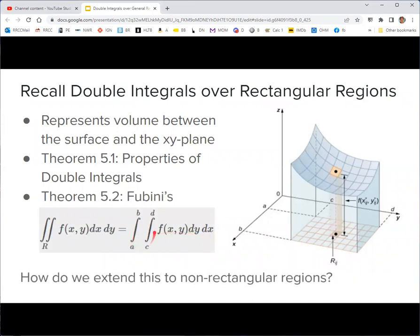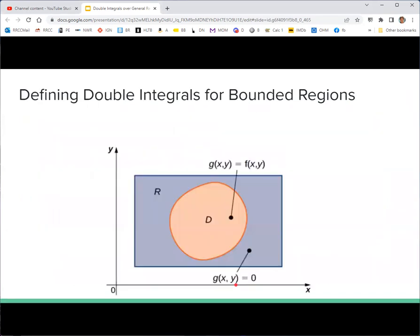If these limits of integration go from A to B and C to D and define a rectangle, the big question is how would you deal with it if it was not a rectangle? Theoretically, let's say we have some non-rectangular region D that we'd like to integrate over. We're just looking at the xy-plane from above here.